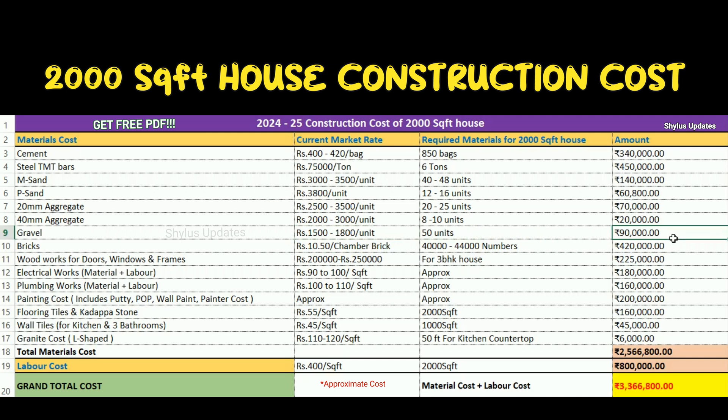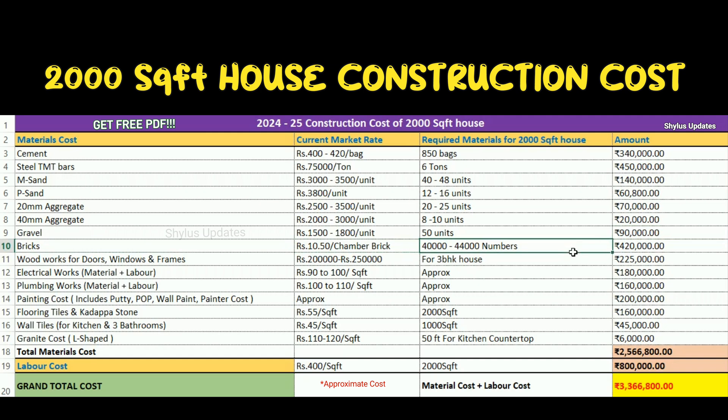Gravel: ₹1,500 to ₹1,800 per unit. 50 units of gravel are required for a 2,000 square feet house. Total amount is ₹90,000. Bricks: ₹10.50 per brick. For a 2,000 square feet house, 40,000 to 44,000 bricks are required. The total amount for bricks is ₹4,20,000.